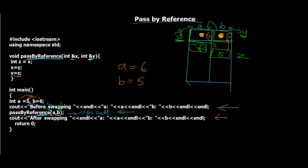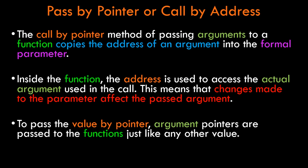Now let's move on to pass by address, also known as pass by pointer or call by pointer. The call by pointer method copies the address of an argument into the formal parameters. Inside the function, the address is used to access the actual arguments, so changes affect the passed arguments. If you're unfamiliar with pointers, check out the linked video, as we've covered pointers and dynamic memory allocation there.